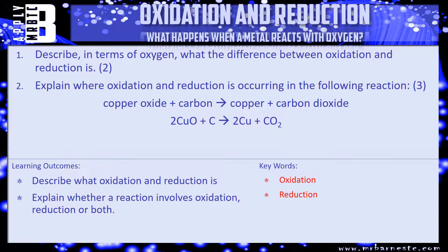Part 2, explain where oxidation and reduction is occurring in the following reaction, it's worth three marks, so you've got copper oxide plus carbon goes to copper plus carbon dioxide, and you've also got the symbol equation. So explain to me which one has been oxidized, which one has been reduced, and use your definitions from number 1 to help you.